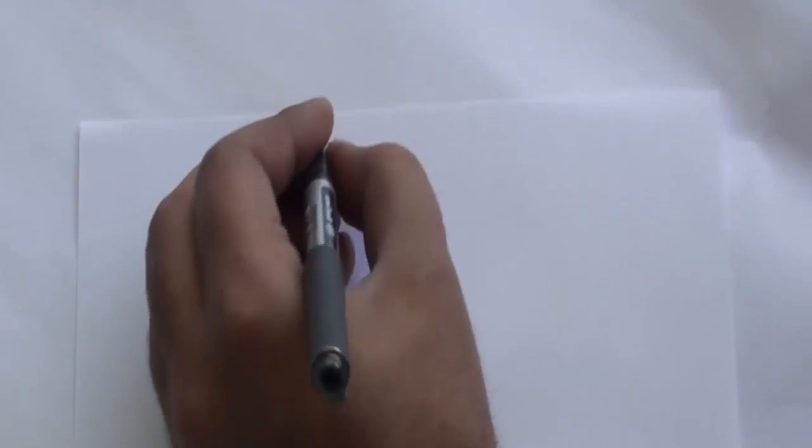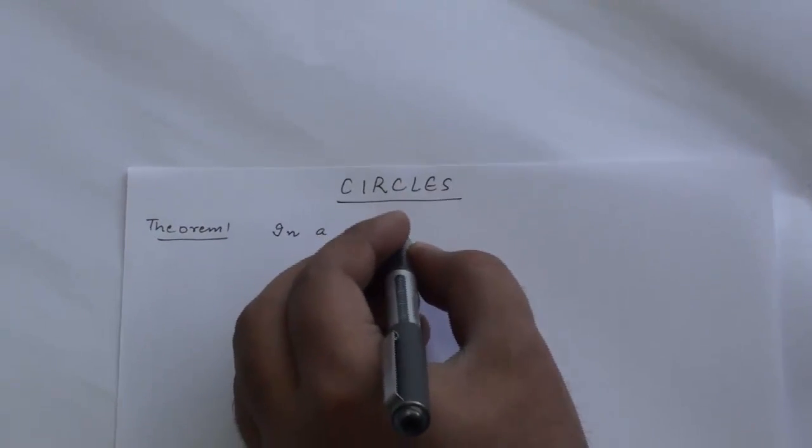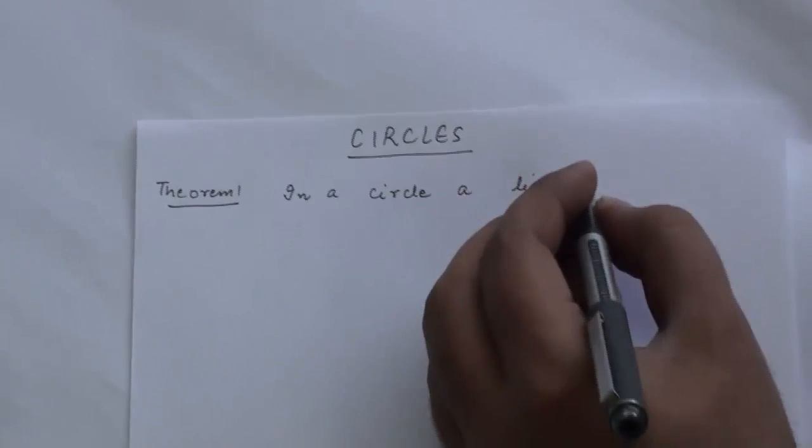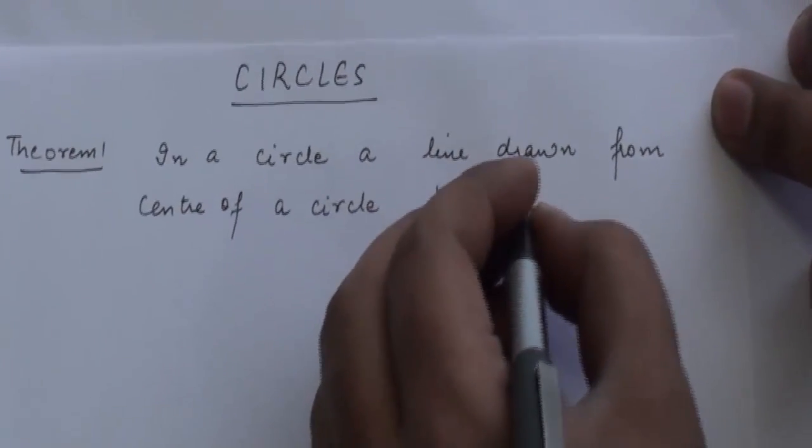Now first, we have a theorem related to circles, which is: in a circle, a line drawn from the center of the circle perpendicular to a chord.